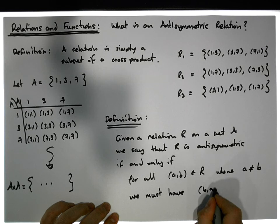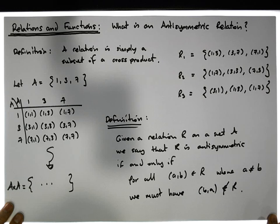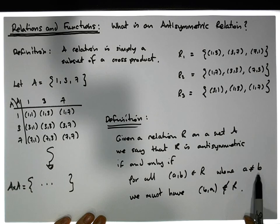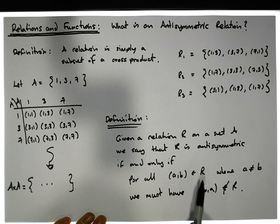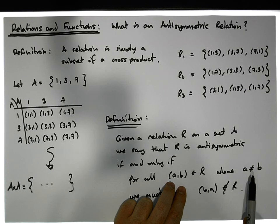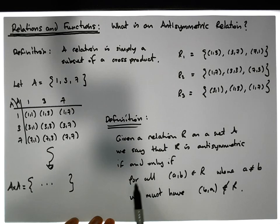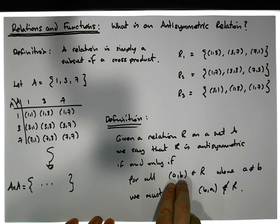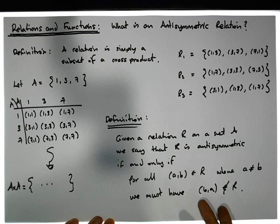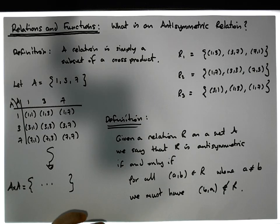we must have that (b, a) is NOT in OR. So for all ordered pairs in the relation where a ≠ b, the flipped ordered pair (b, a) cannot be in the relation. Those are the only pairs we care about — we ignore pairs where a equals b.